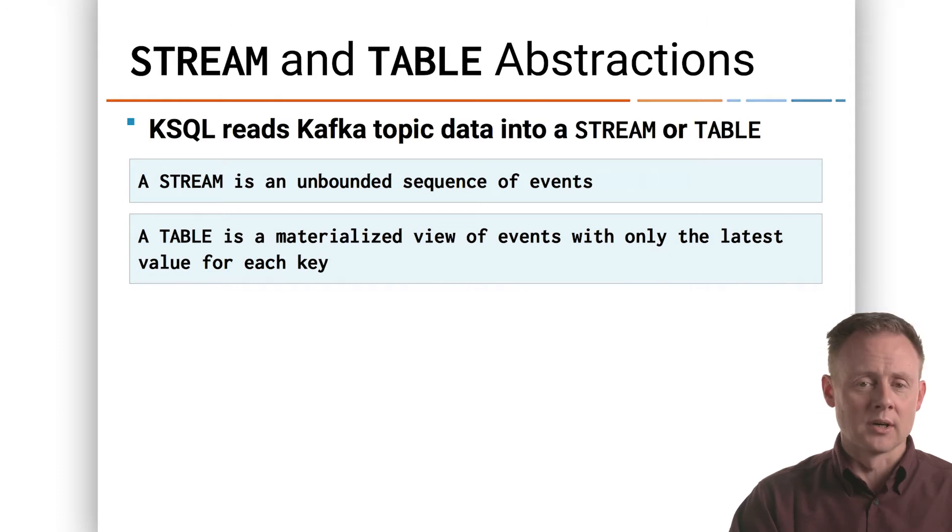Streams and tables conceptually are very different things. A stream is an unbounded sequence of events. You could think of that as just things happening in the world. All of those events are immutable because, if you think about it, events are. When a thing happens, you don't get to say that it happened differently than it did or that it didn't happen. The event happened, and if you're recording that, it's this immutable thing. So this sequence of events happening in the world is really how you want to think of a stream.